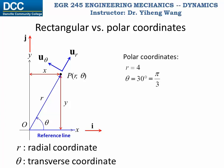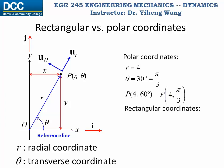So if we have polar coordinates r equals 4 and theta equals 30 degrees or pi/3 radians, then this point will have coordinates of 4, 60 degrees or 4, pi/3. We can translate that into x, y coordinates. For the rectangular coordinates, x equals r cosine theta, which equals 2 in this case, and y equals r sine theta, which equals 2 times the square root of 3. Therefore, the same point represented by rectangular coordinates is now (2, 2√3).